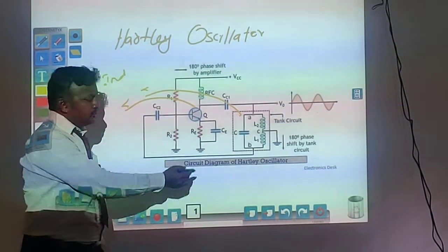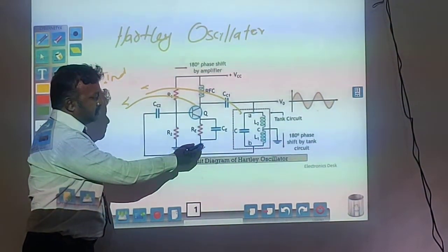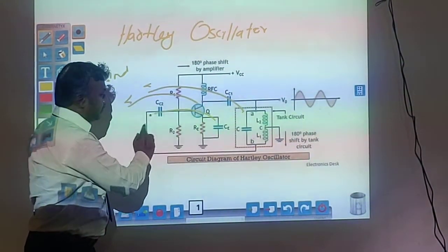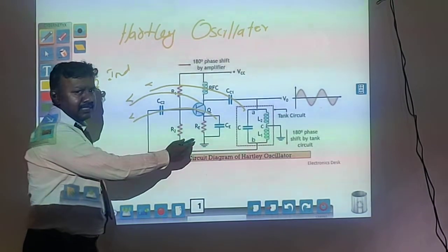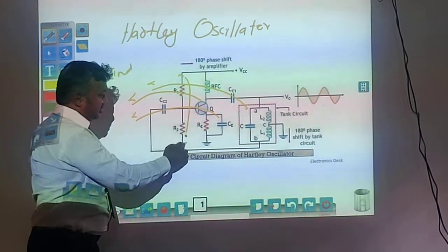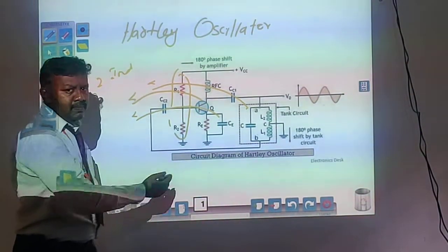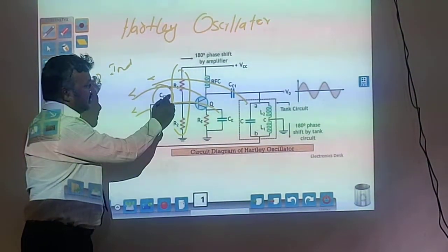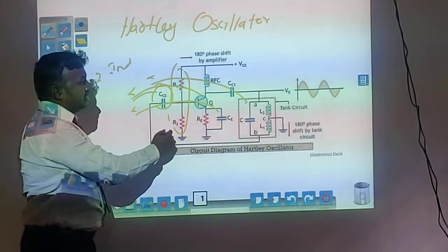We also have a tuned circuit using a capacitor and resistor. This capacitor is used as a bypass capacitor and the resistor as a bypass resistor. The two resistances R1 and R2 are used as a voltage divider, and for coupling purposes we use CC1 and CC2.